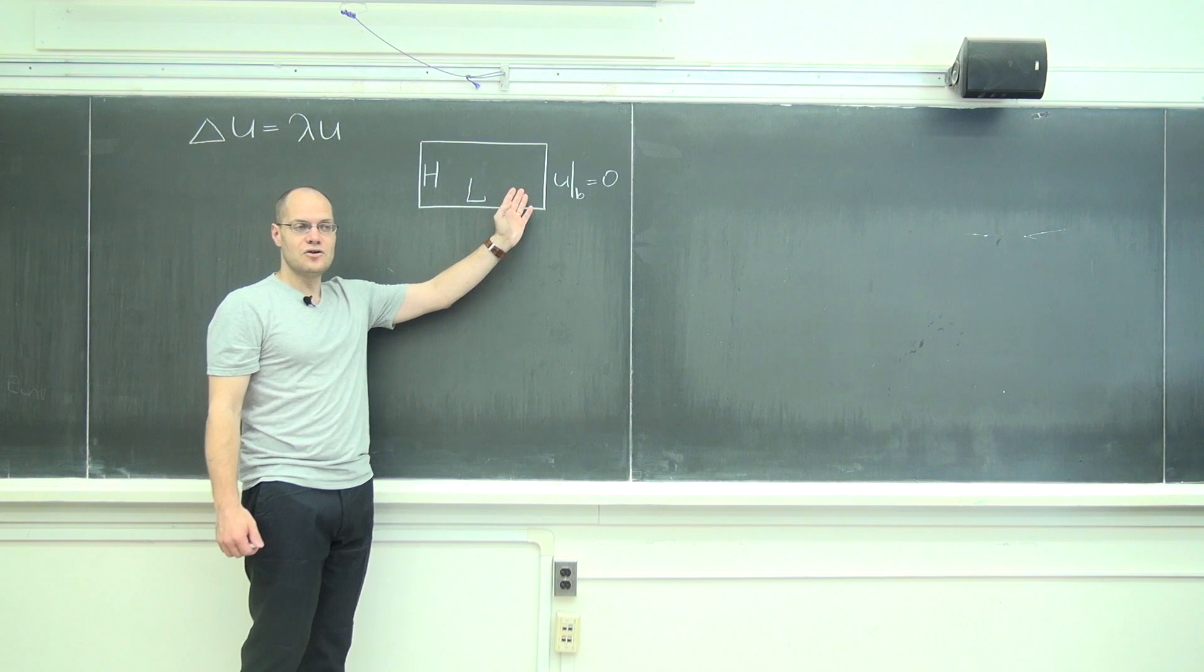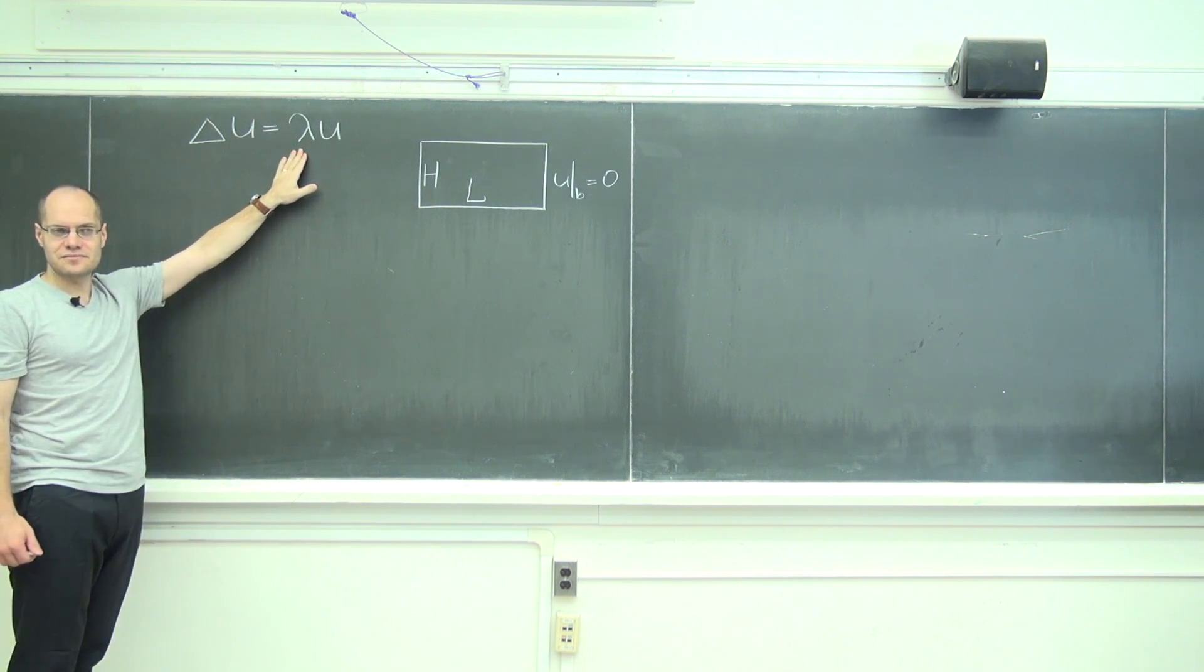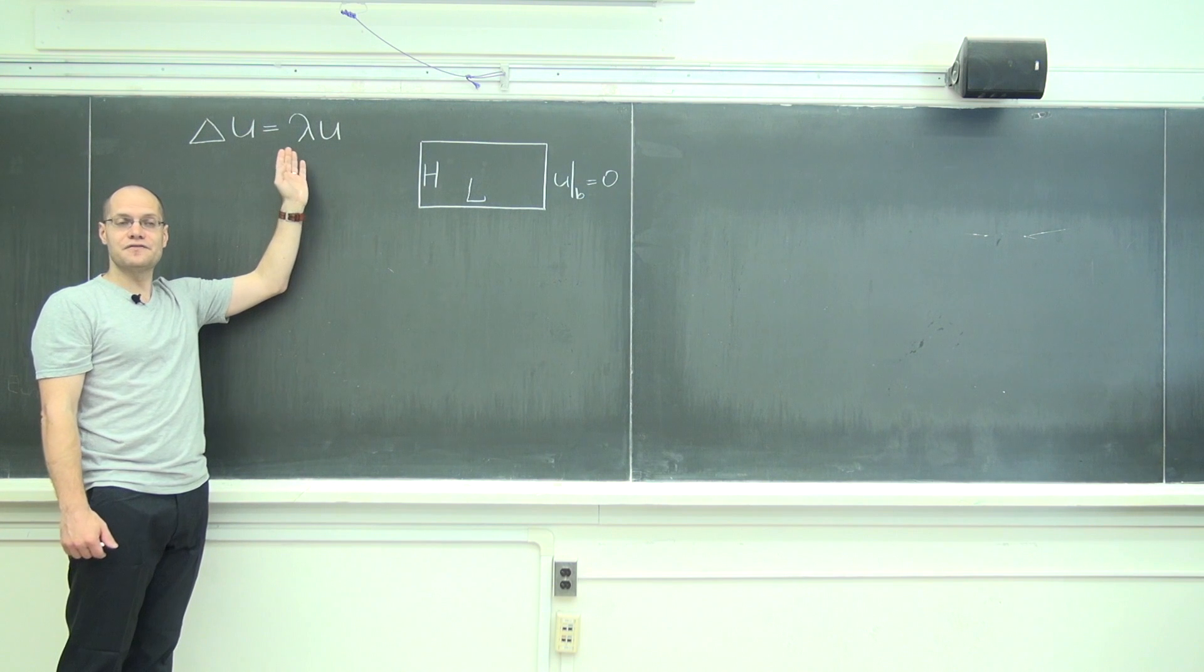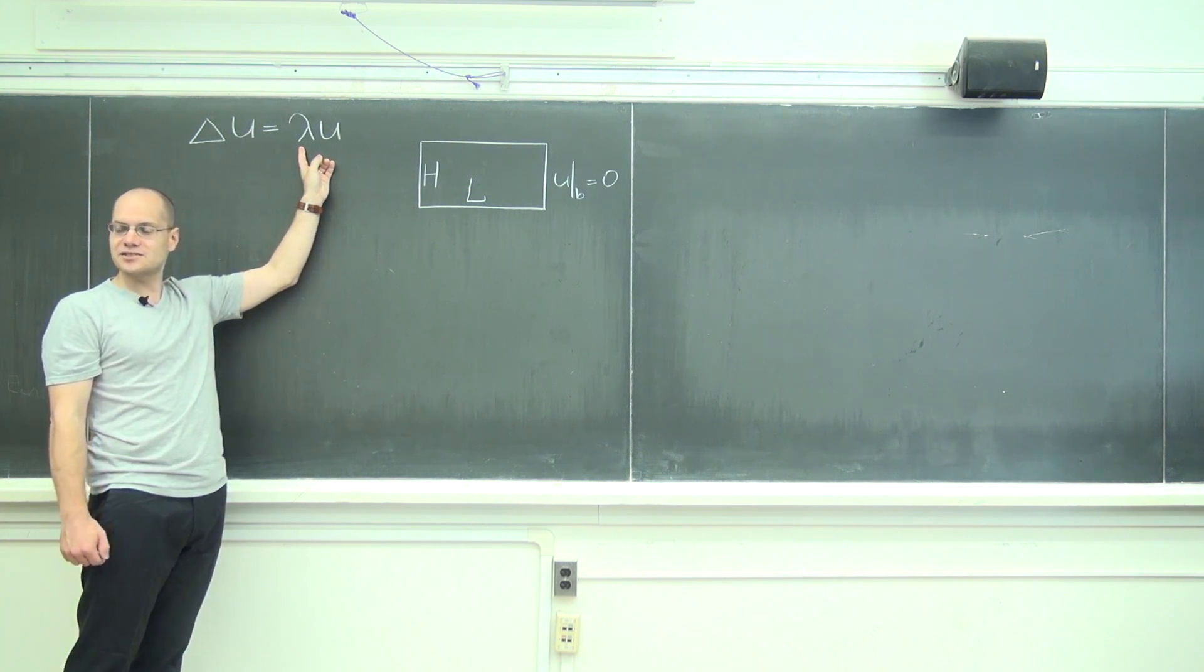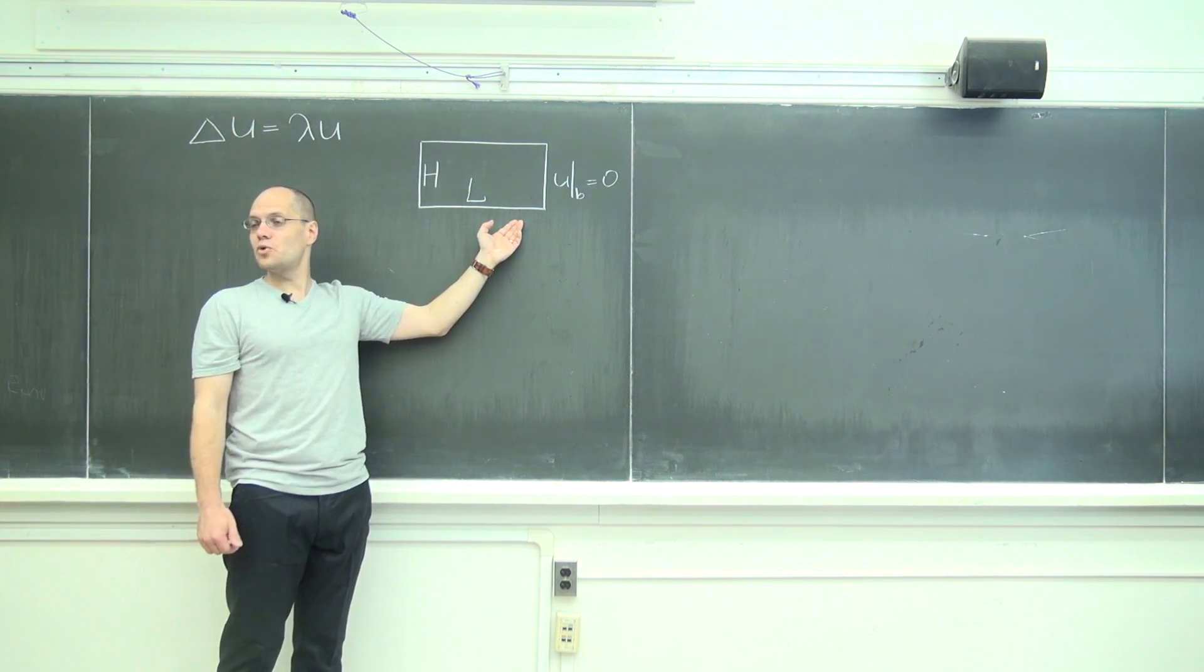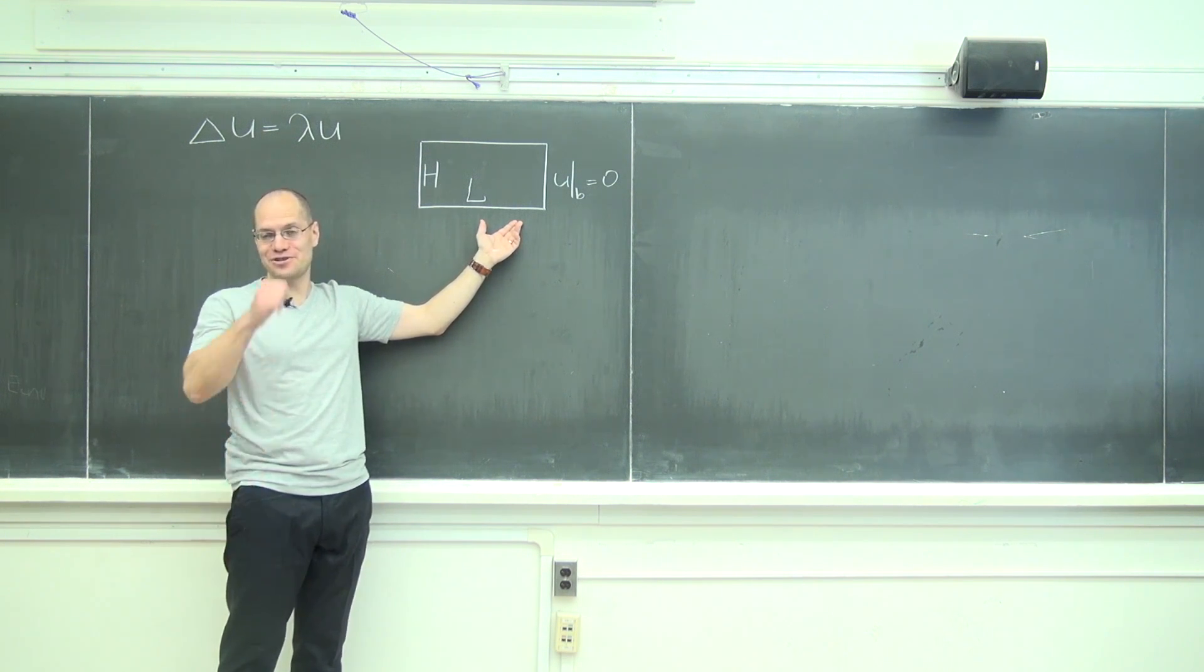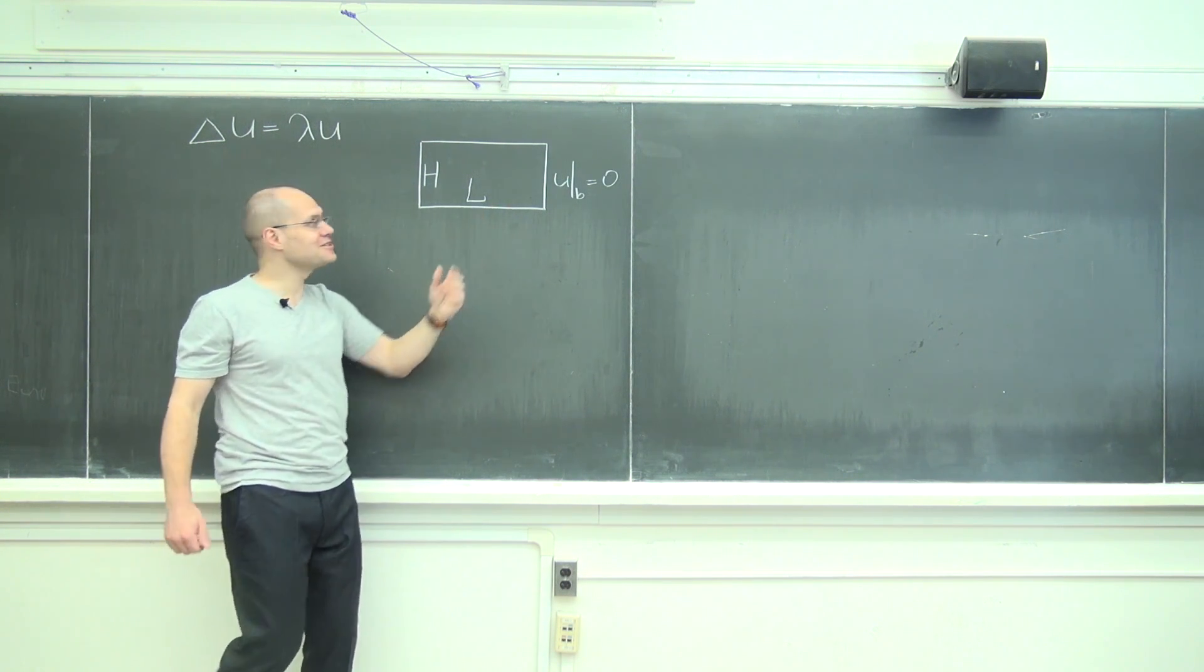So let's discover what a drum would sound like. For that, we only have to solve this equation. If we retrace the steps of how this came from the wave equation, the frequencies are the square roots of these lambdas. So lambdas represent the frequency squared. We're on a rectangle, so what coordinate system would it be natural to use? Cartesian.